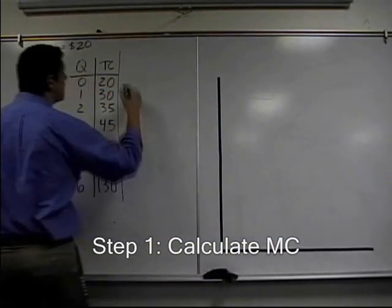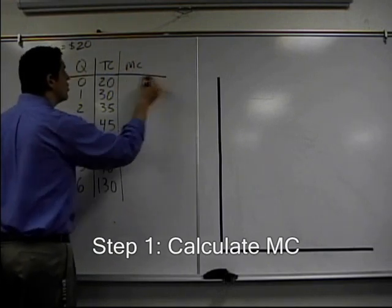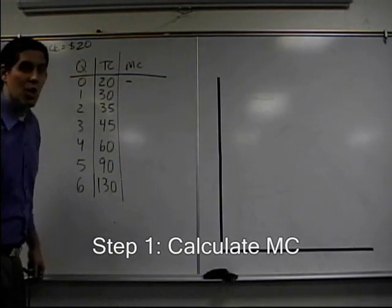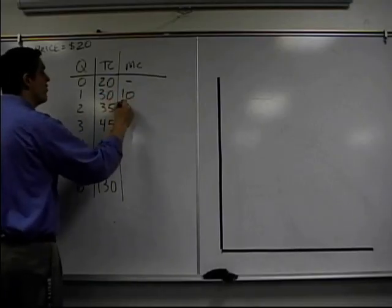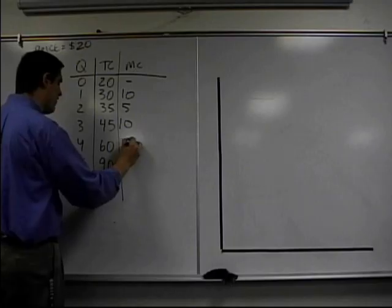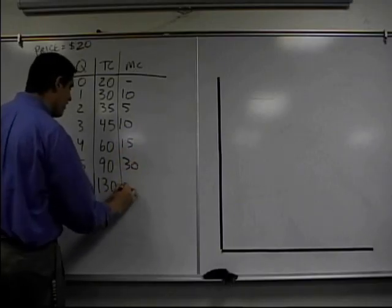The first thing you need to actually calculate is something called marginal cost. You learn this from your teacher. Marginal cost is the change in total cost. 20 to 30 is 10, from 30 to 35 is 5, then we're going to go 10, then 15, then 30, then 40.